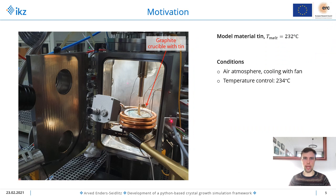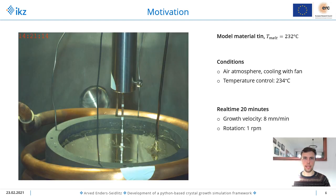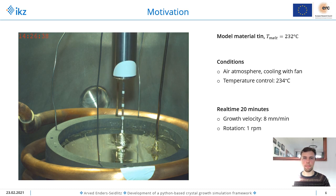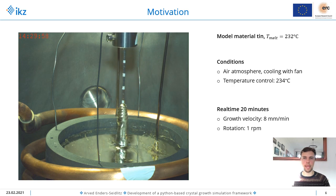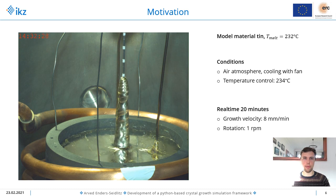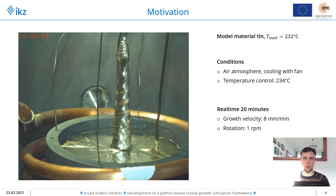That's why in the NemoKRIS project at Leibniz Institute for Crystal Growth we developed a model experiment of the Czochralski process, using for example tin as a model material with a lower melting point of 232 degrees Celsius and relaxed environmental conditions. For example, we can perform the whole growth process with the open door at atmospheric conditions. Here you can see a time-lapse video of the growth in our model experiment, with the seed crystal already dipped into the melt, which is now pulled upwards first with four millimeters per minute and now with eight millimeters per minute while rotating it with one revolution per minute. There is a crystal growing below the seed.